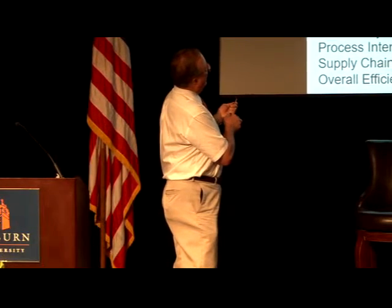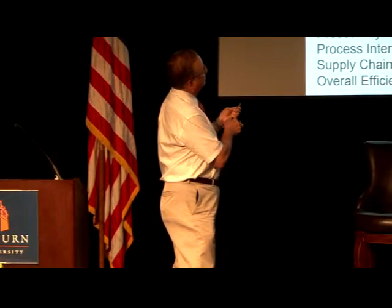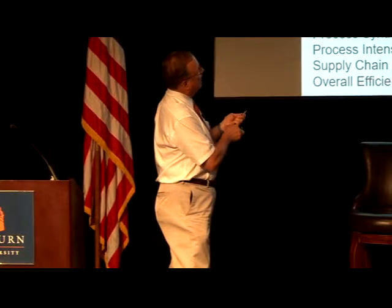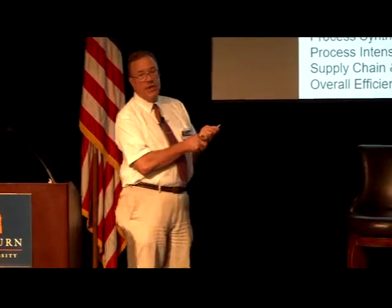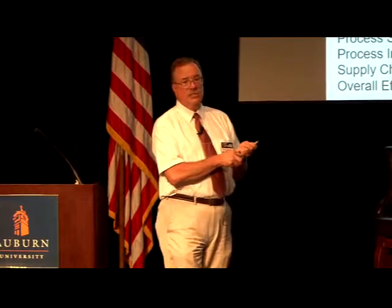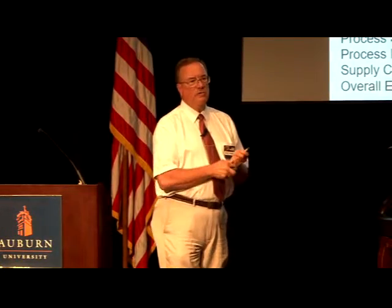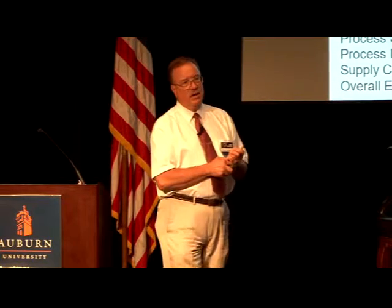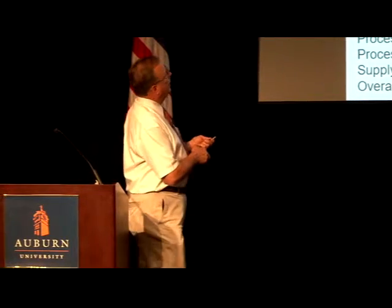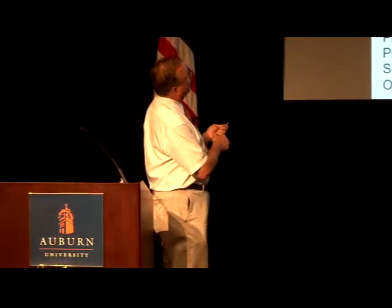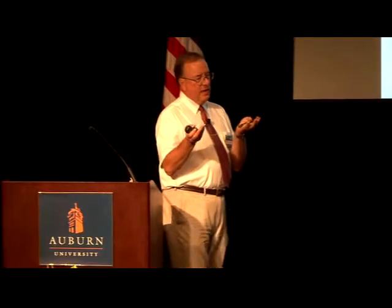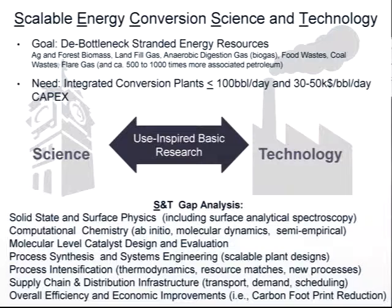The full list of stranded energy sources includes: ag and forest product waste or biomass, landfill gas, anaerobic digester gas — there are 8,200 potential sites in the U.S., only 147 are doing anything to harvest that gas — food wastes, coal wastes, flare gas. Remember, flare gas is produced in association with petroleum. If you lock up the gas, you actually lock up 500 to 1,000 times more value in petroleum. So it is a big issue.